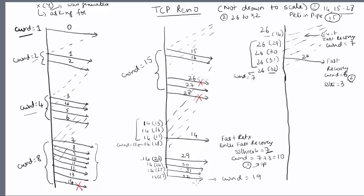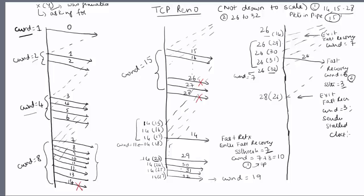There are no more duplicate ACKs since 32 was the last packet. The next ACK, from retransmitting 26, asks for packet 28. There are no more packets in the pipe at this stage. You exit fast recovery and set CWND equal to ssthresh, which is 3. At this point no more ACKs are coming — the sender is stalled and the self-clock is lost. To recover packet 28, you have to rely on a timeout.